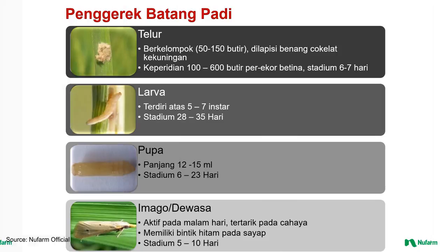Penjelasan lebih lengkap dimulai dari telur: telur ini berkelompok dari 50-150 butir, dilapisi benang coklat kekuningan, kepiridian dengan jumlah 100-600 butir per ekor betina dengan stadium 6-7 hari. Larva terdiri atas 5-7 instar dengan stadium 28-35 hari. Pupa dengan panjang 12-15 mm dengan stadium 6-23 hari. Kemudian berubah menjadi imago dewasa atau kupu-kupu dengan ciri aktif pada malam hari, tertarik pada cahaya, memiliki bintik hitam pada sayap, dan stadium 5-10 hari.